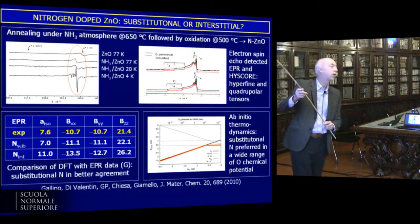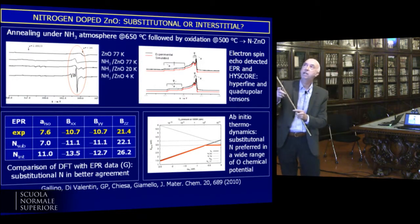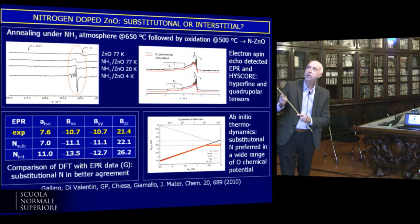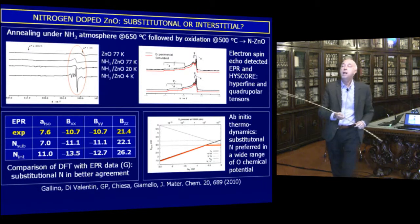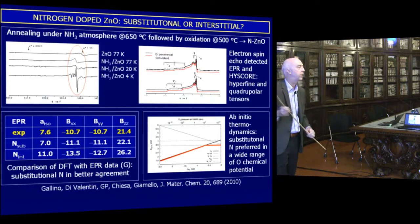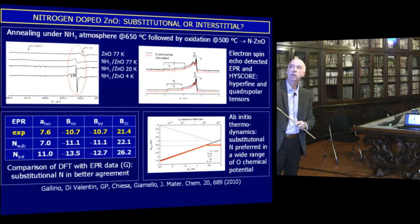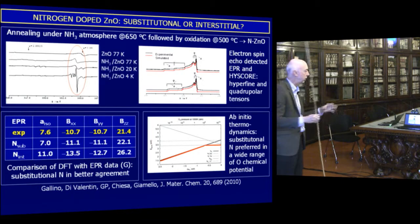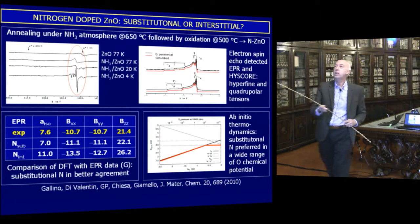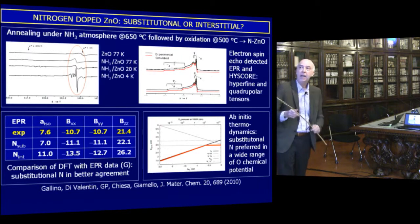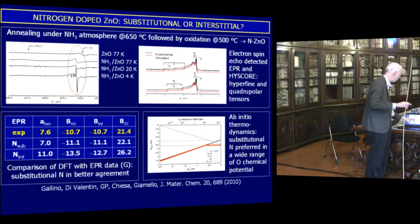Our experimental colleagues prepared nitrogen-doped zinc oxide — they took zinc oxide powders, exposed them to ammonia, annealed, and got very clear EPR signatures indicating nitrogen impurities in the material. The computed electron spin resonance properties show that if nitrogen is substitutional, we have excellent agreement with the experimental value; if it is interstitial, the agreement is much worse. Even the thermodynamic stability analysis concludes that nitrogen substitution is preferred. Again, I would like to point out the extreme accuracy of the reproduction of these parameters, indicating very strong localization.